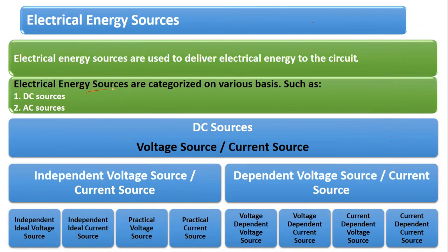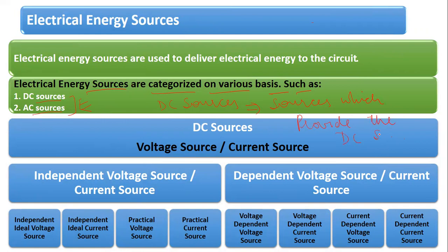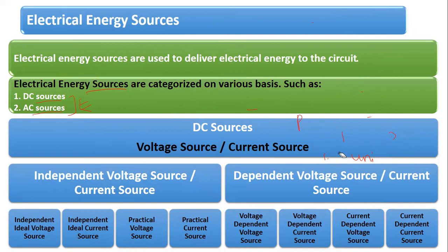Now if we have to categorize electrical energy sources, there are various ways to do so. The first category is DC sources and AC sources. DC sources are those which provide a unidirectional supply to the electrical system. AC sources are those which provide a bidirectional signal to the electrical systems.